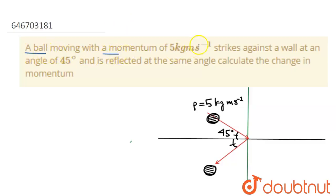A ball moving with a momentum of 5 kg meter per second strikes against a wall at an angle of 45 degrees and is reflected with the same angle. Calculate the change in momentum. So we have to find the change in momentum.